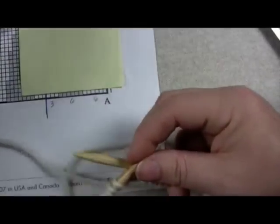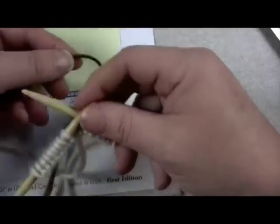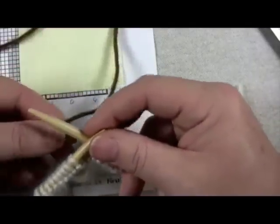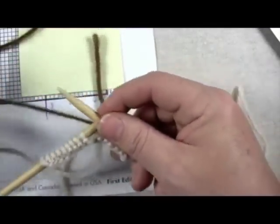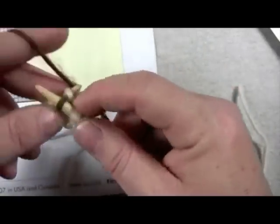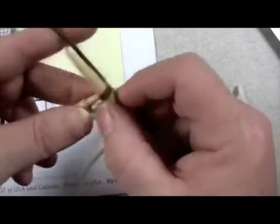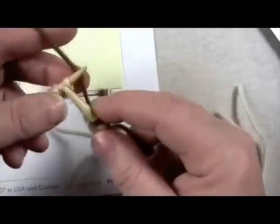So I'm going to find the end of the yarn. Here we go. Leave a few inches, four inches. Just start right in on my six darks. Knit. One, two, three, four, five, six.